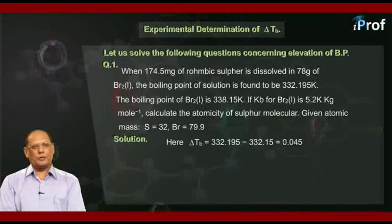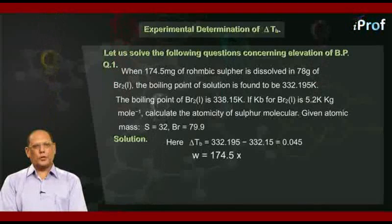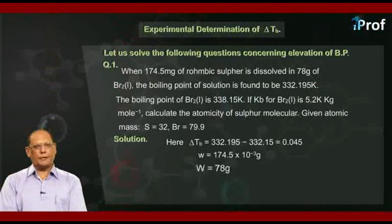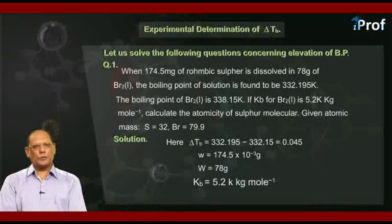Further, we are given small w equal to 174.5 into 10 to the power minus 3 grams, capital W is equal to 78 grams, and Kb is 5.2 Kelvin kilogram mole inverse.